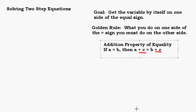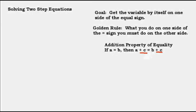The addition property of equality tells us we can add something to both sides of the equal sign. That something may be a negative number as well, so basically that ends up being like subtracting. You could think of this as the addition or subtraction property of equality because C could be a positive or a negative number.